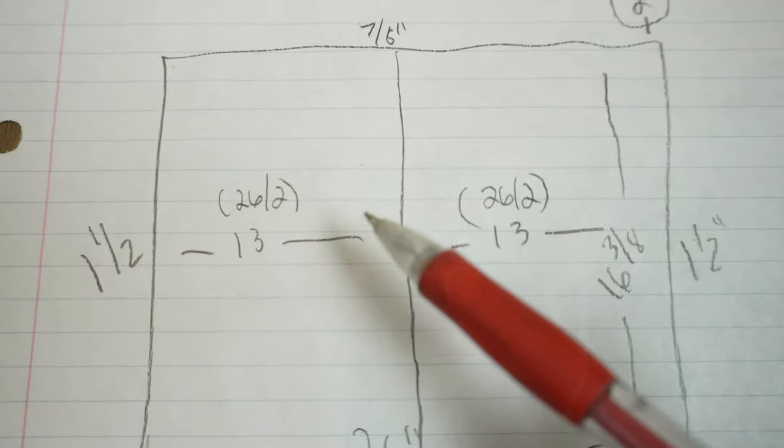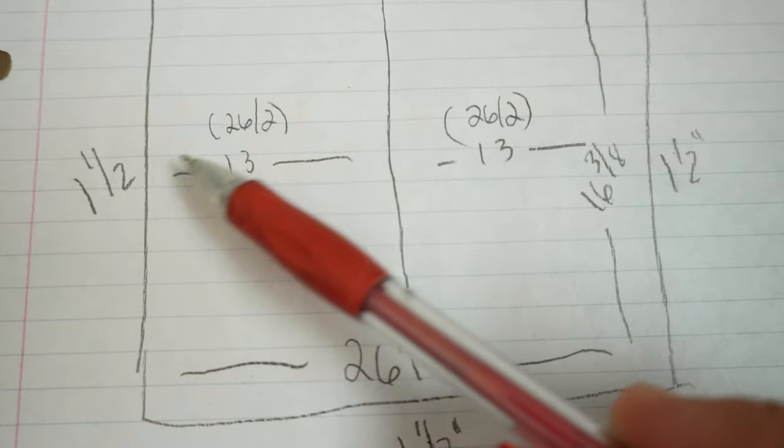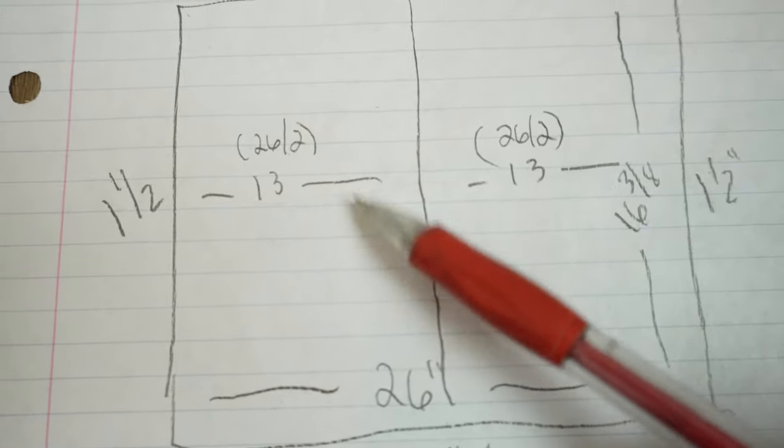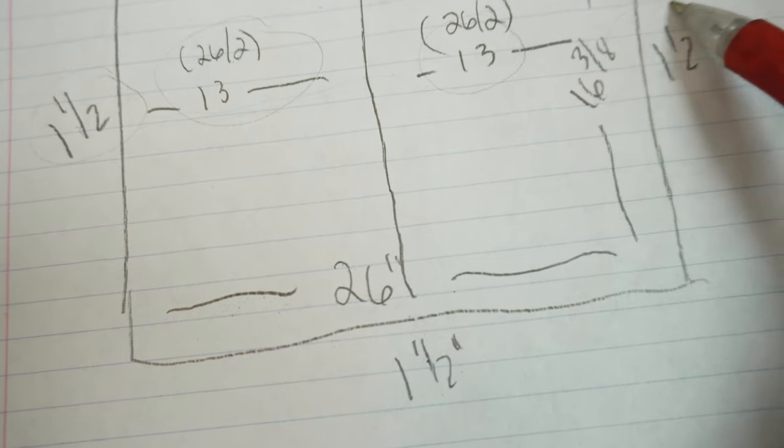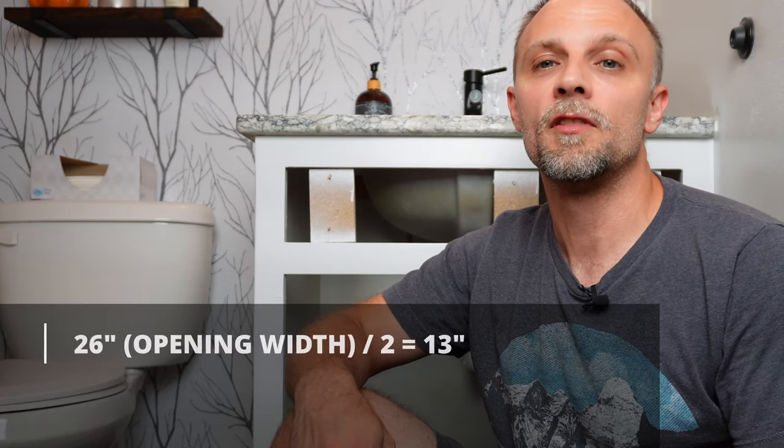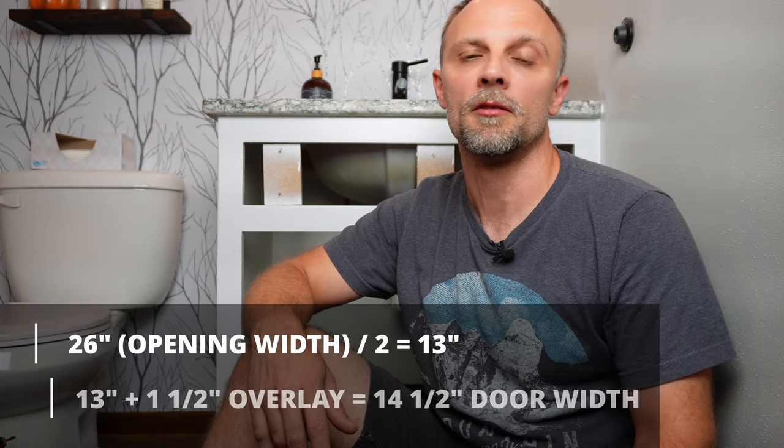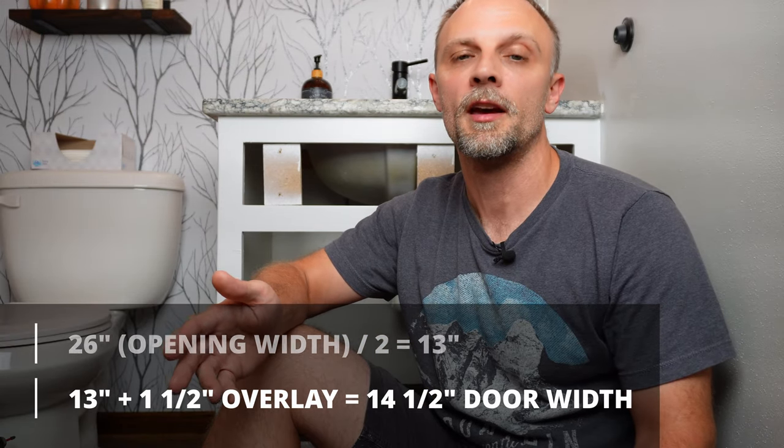Let's start with the cabinet doors. So we're going to take the width of the opening, divide that by two, and then add our overlay. So for this project, we're going to take 26 inches divided by two, which equals 13 inches, which is half of the width of our opening. And then we're going to add one and a half inches on each side for the overlay. This means that each door will be 14 and a half inches wide, which again would be 13 inches plus that one and a half inch overlay.